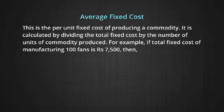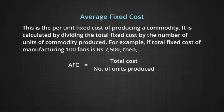Let us first talk about average fixed cost. This is the per unit fixed cost of producing a commodity. It is calculated by dividing the total fixed cost by the number of units of commodity produced. For example, if total fixed cost of manufacturing 100 fans is Rs. 7500, then AFC equals 7500 divided by 100, which gives us 75 rupees.